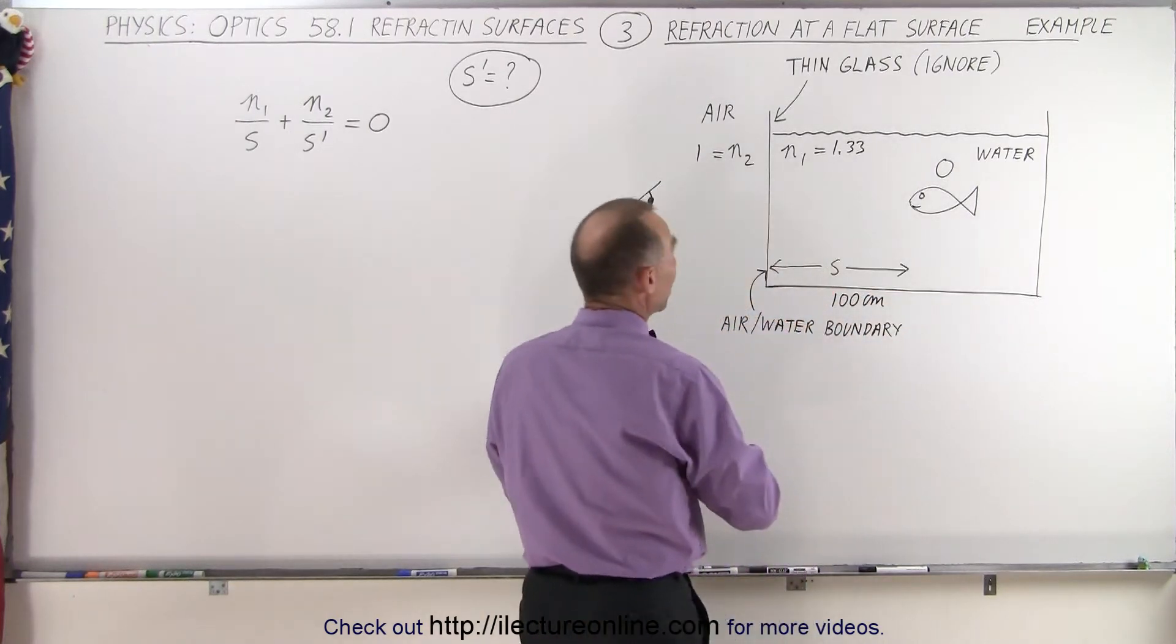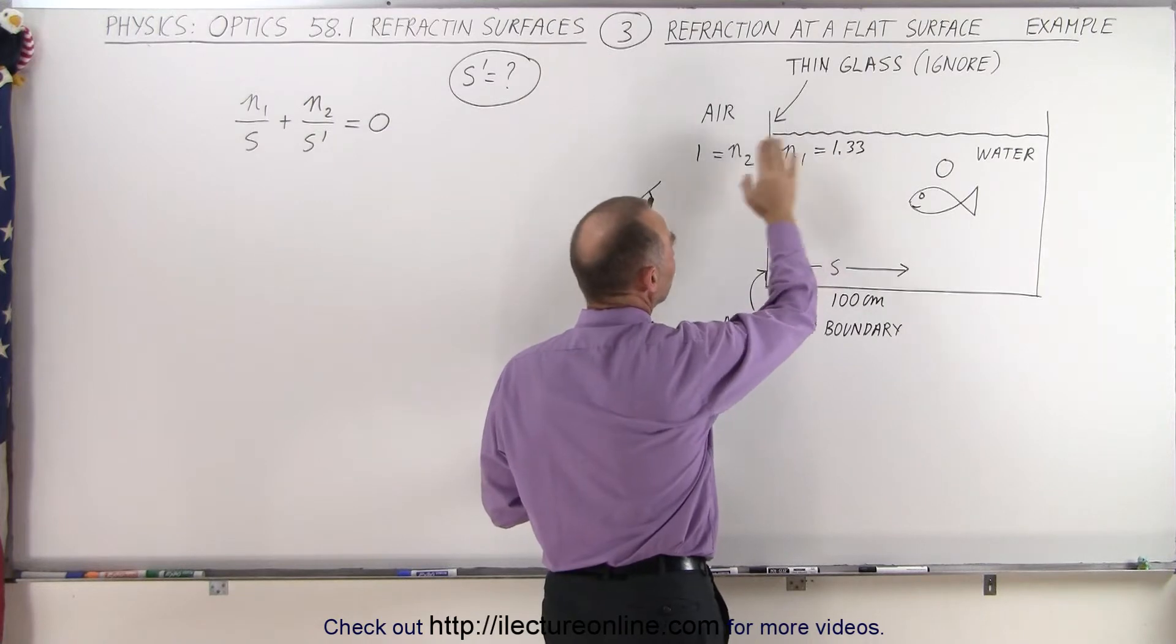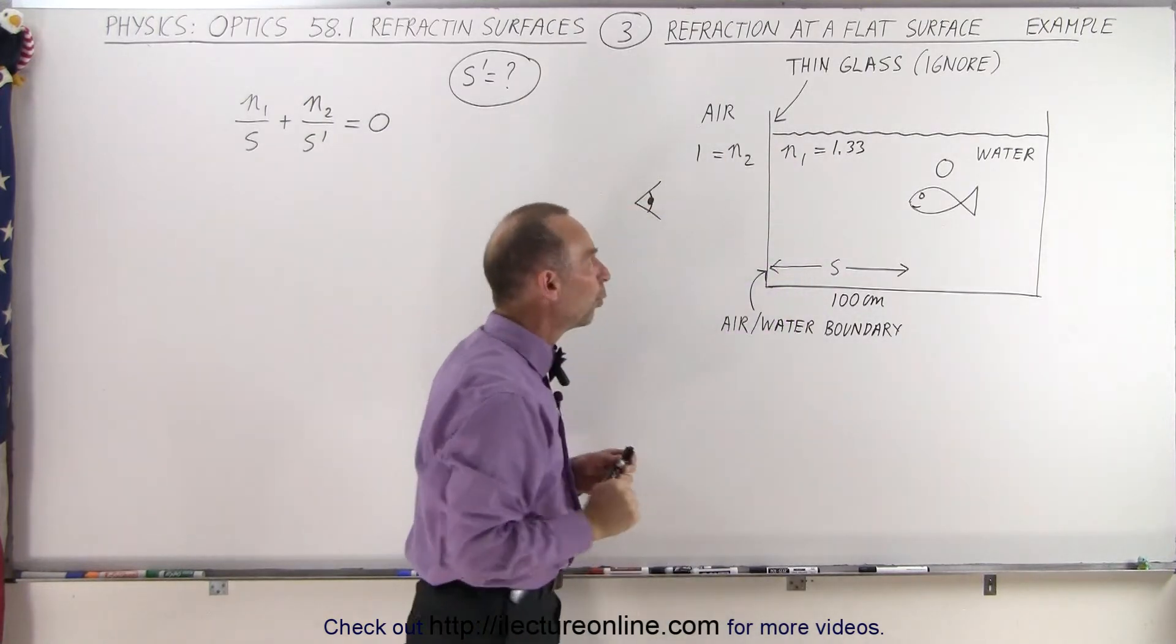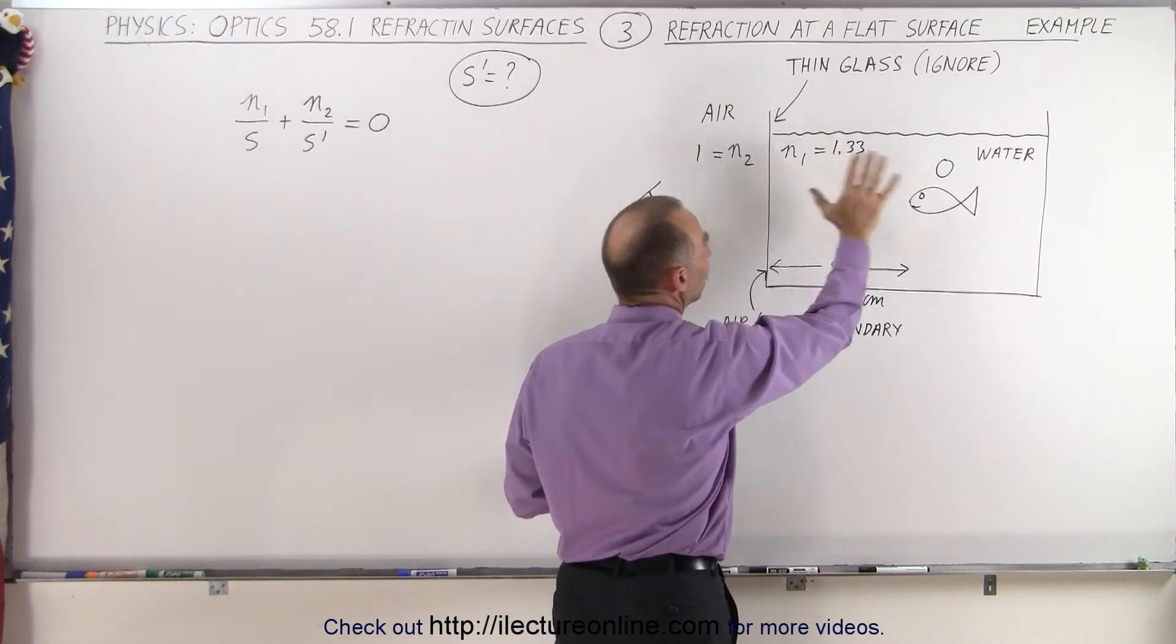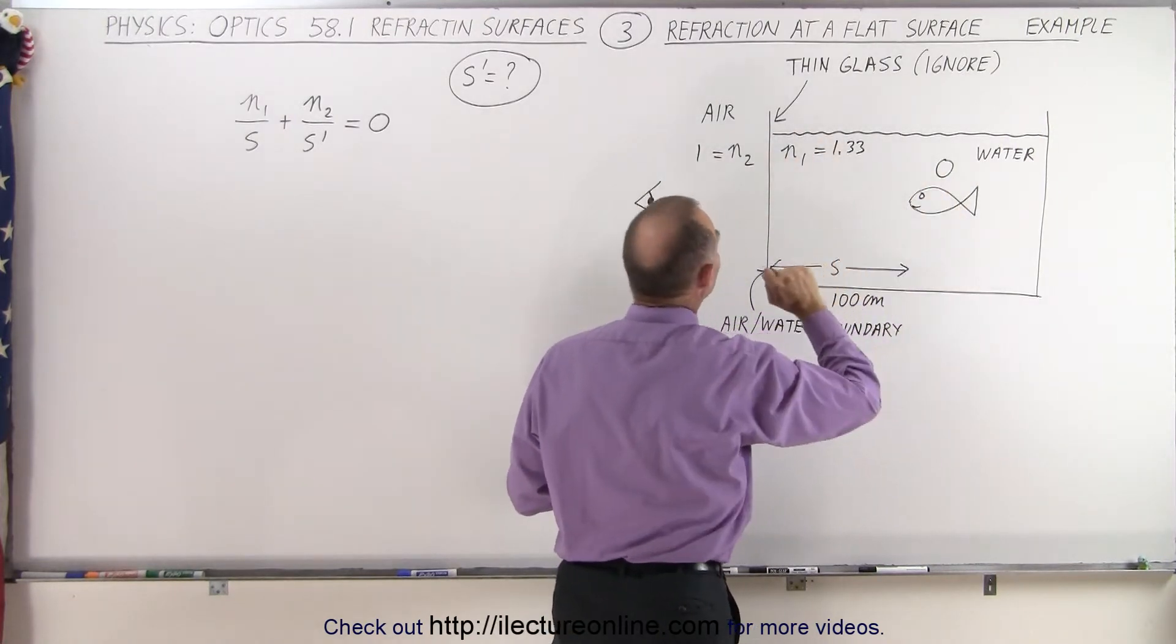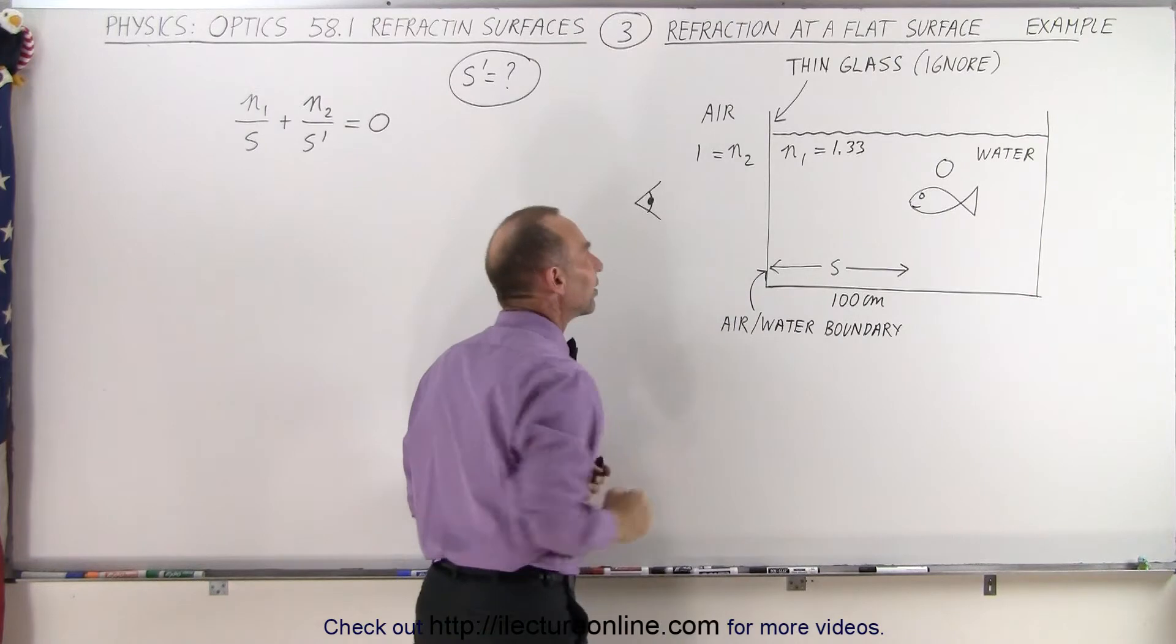Now the index of refraction of water is 1.33. The index of refraction of air is equal to 1. Notice that we call N1 the index of refraction on the side of the object, the fish, and N2 on the other side of the boundary.